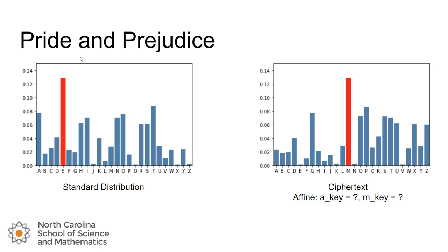Like in this situation, here's a bar chart where I didn't tell you the keys. We might be able to guess that M in this ciphertext is E in the standard distribution. But that's about all we can figure out by looking at this. We don't have a lot of other information from the bar chart.